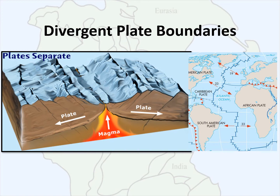Divergent plate boundaries occur where ridges form in the process known as ridge push. Old crust is forced away from the magma plume at the center, magma reaches the surface and cools to form new crust. The mid-Atlantic ridge is an excellent example of a divergent plate boundary. Rates of plate motion here are represented in millimeters per year — on average this equates to maybe one to two inches a year, about the same rate that your fingernails grow.